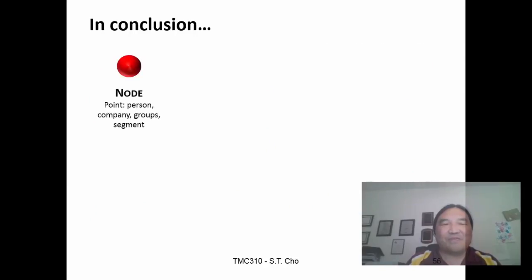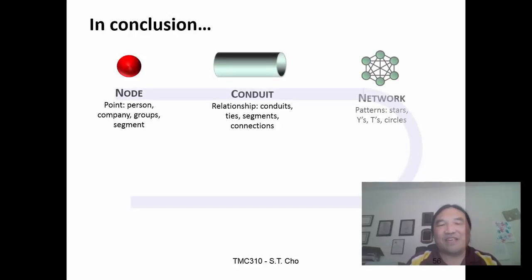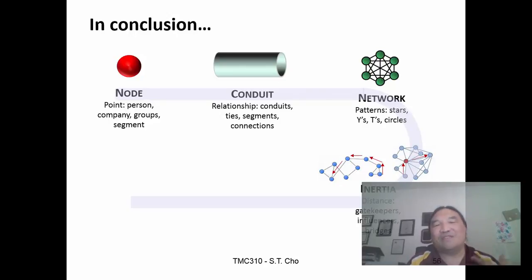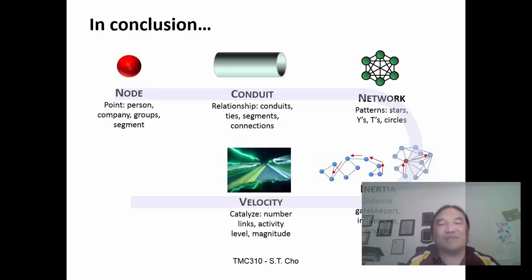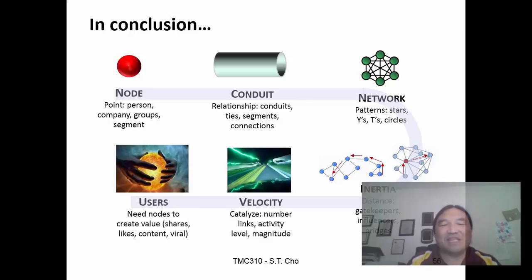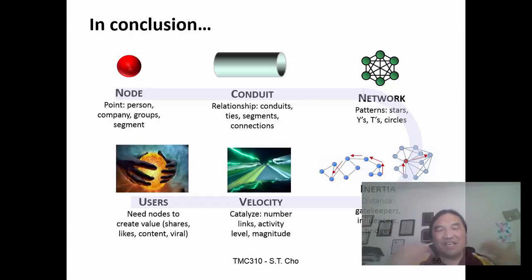Wrapping up this lecture: it's about nodes, the conduits that connect them, and the patterns that get created. How do I prevent inertia? How do I keep people active? How do I minimize distance? It's about understanding how you influence gatekeepers or influencers. I'm concerned about velocity — how quickly do things happen — and the number of links and their magnitude. Users need to be able to share and create nodes, because that's how you build active, large networks.